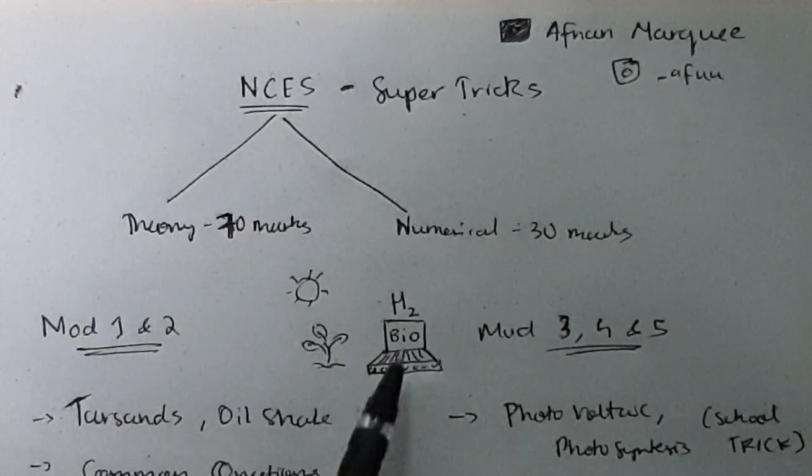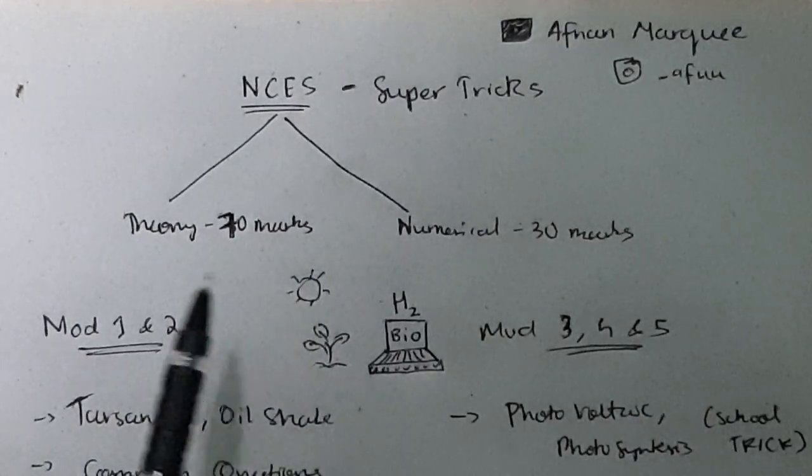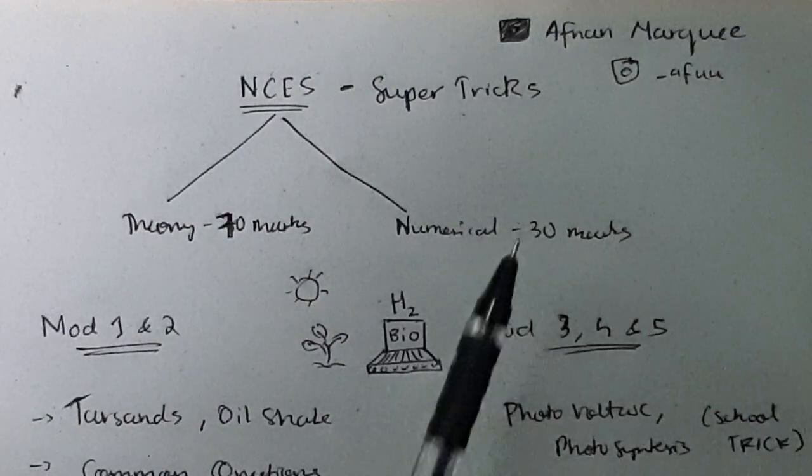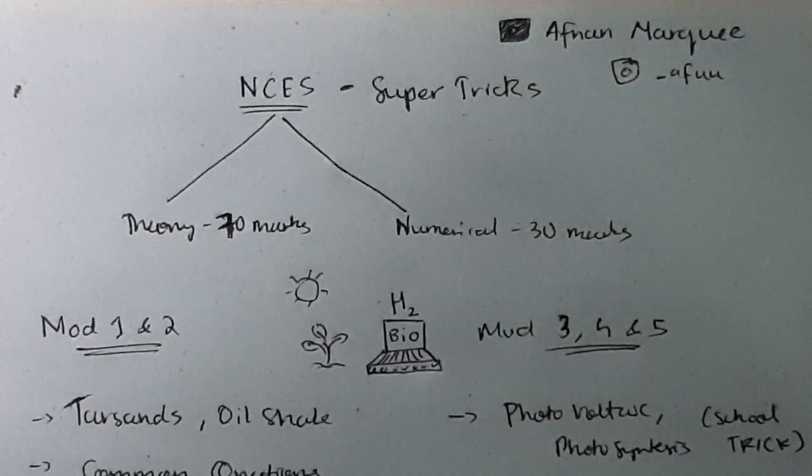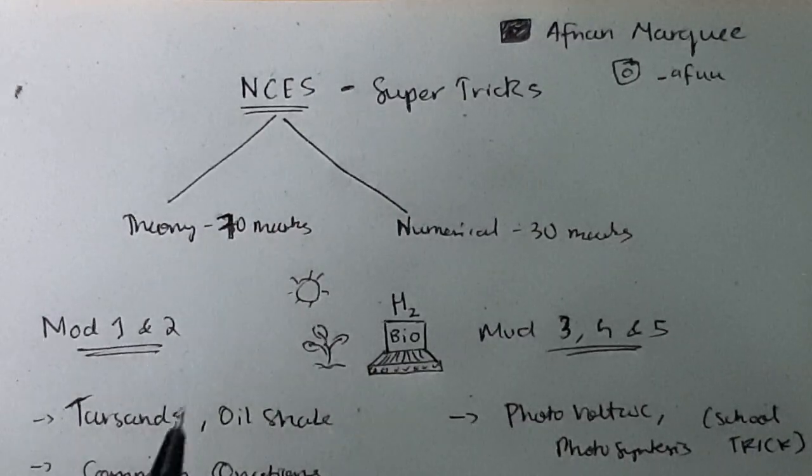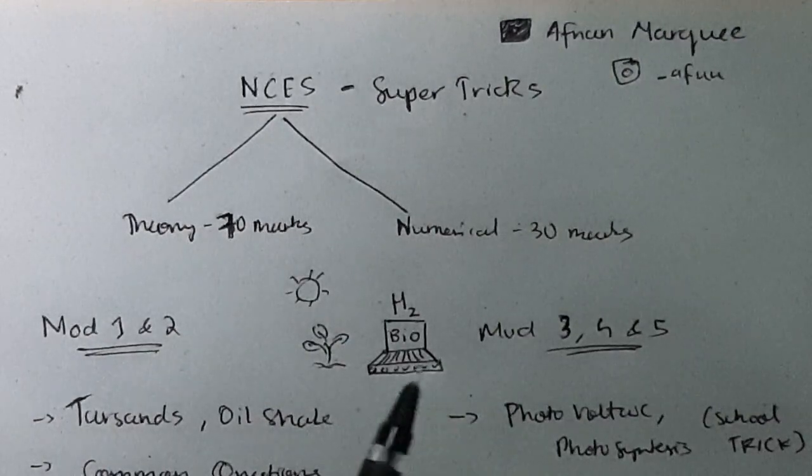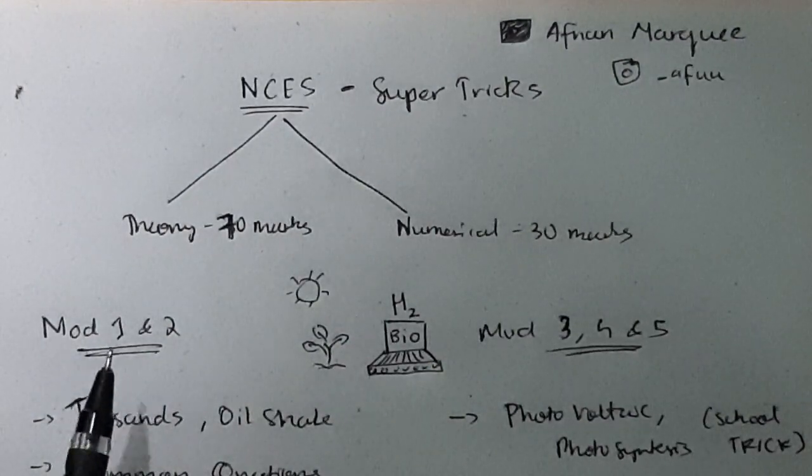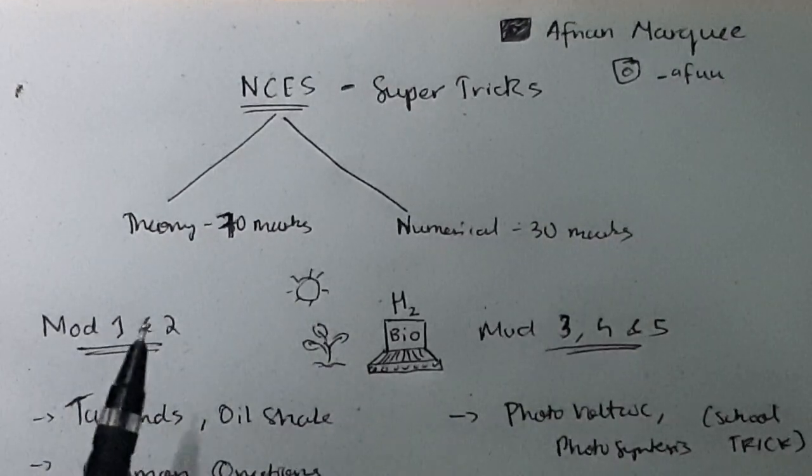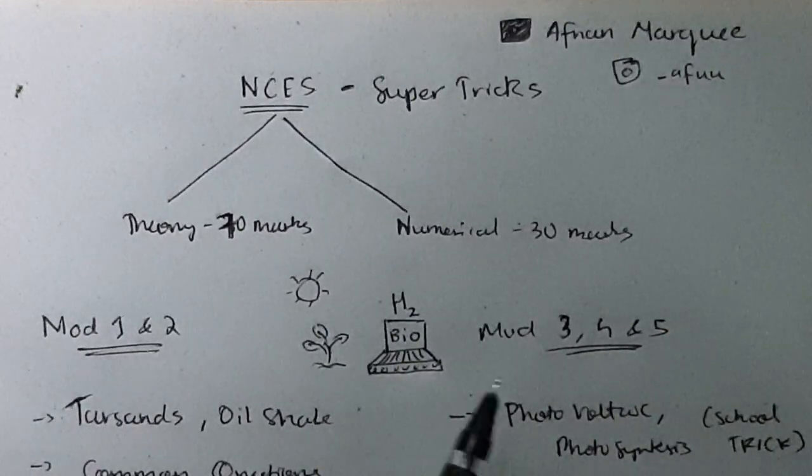The theory marks are 70 marks and numericals are 30 marks. Numericals are asked mainly in module 2, 3 and 4 in these three modules as well as first module. In these four modules numericals are there. In fifth module it's pure theory. If in all of these four modules some numerical came, the numerical will be around 7 to 8 marks each, so four modules and each 7 to 8 marks, how many marks in total? 28 marks. So rough approximate at max it will not cross 30 marks.